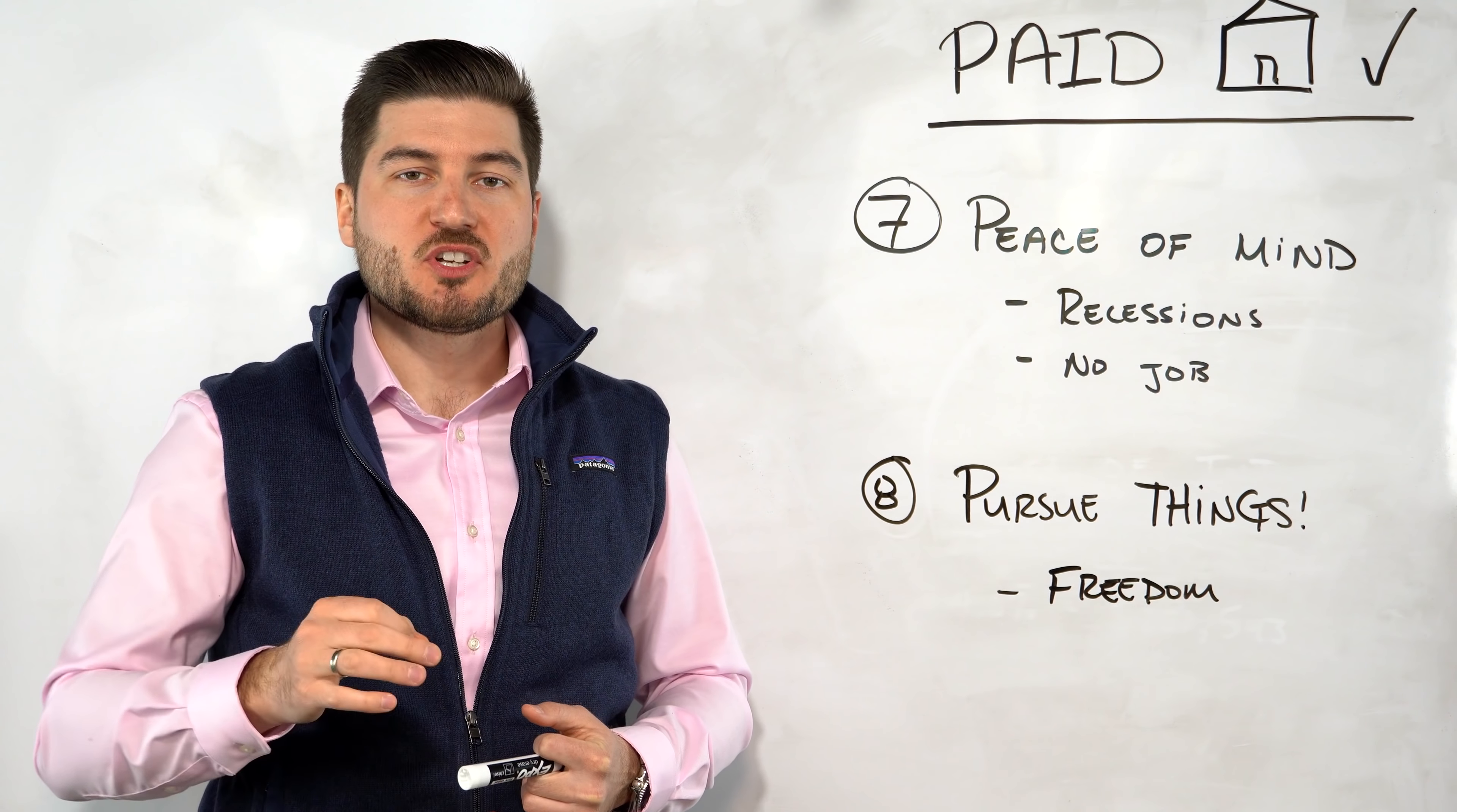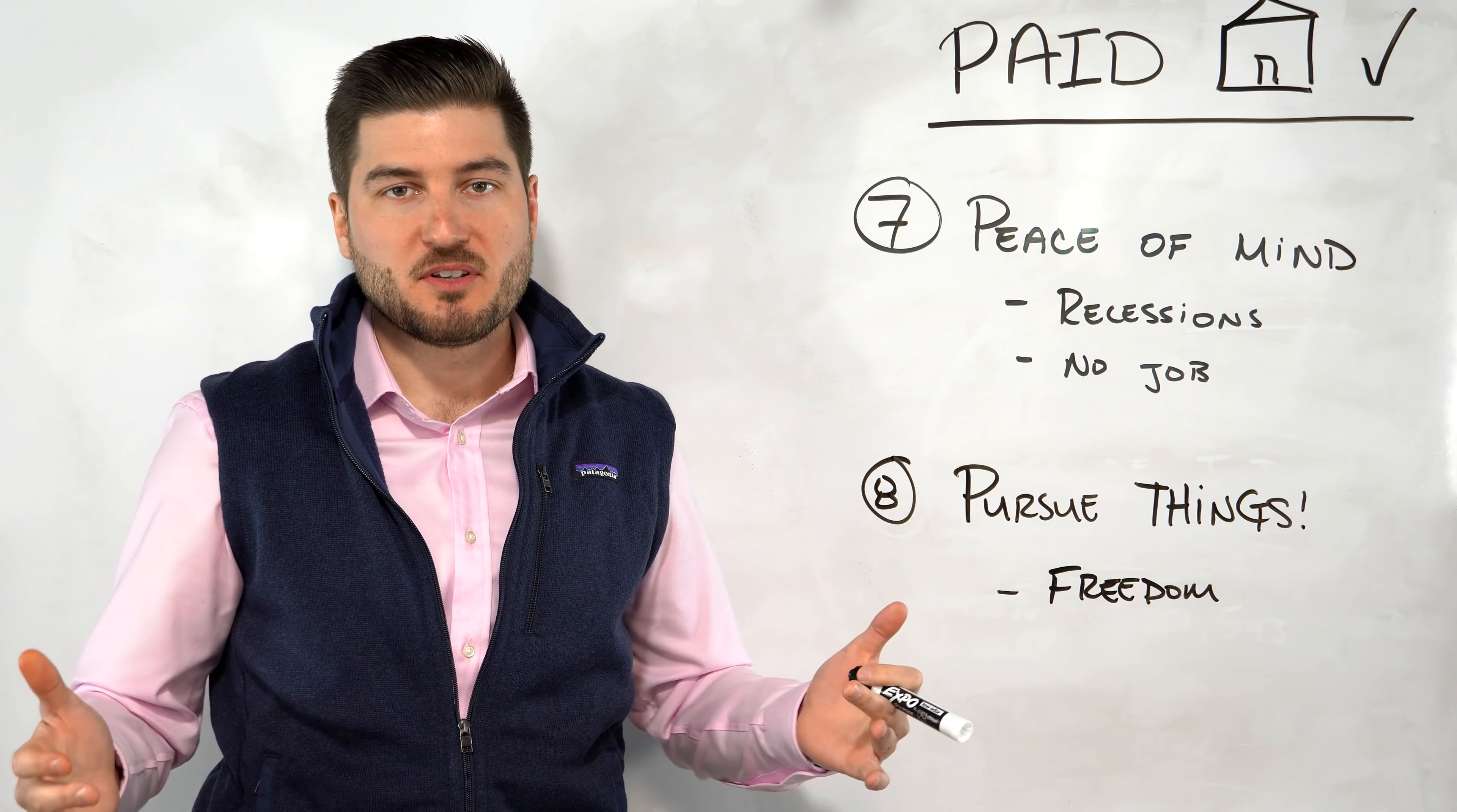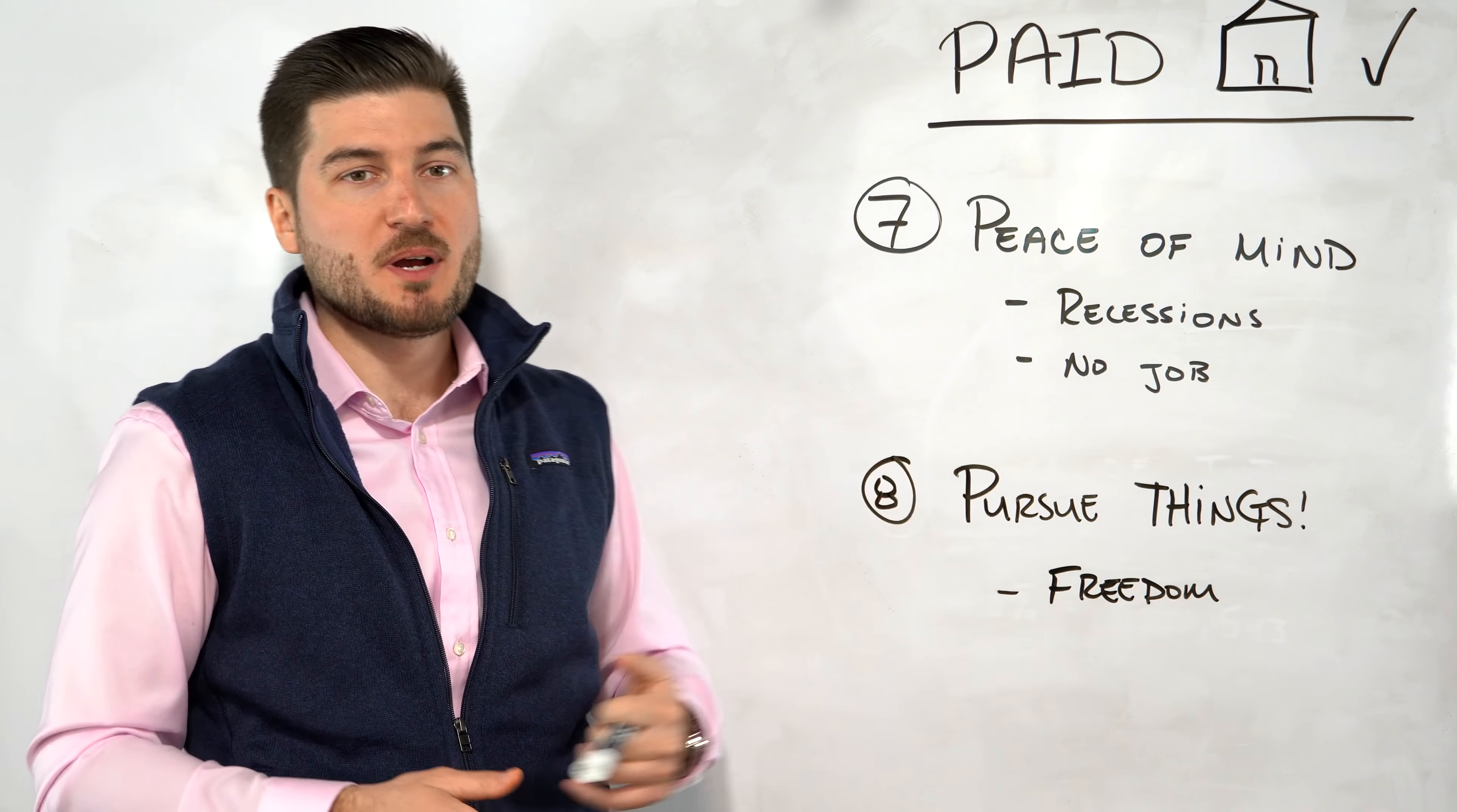Okay, so number seven and eight are where we started getting into the emotional and psychological benefits of not having a mortgage. So number seven is peace of mind. So we've all been through tough times. I remember 2008, I could barely find a job after I graduated with a finance degree because of the great financial crisis. Same thing after last March with the Cervasus sickness. You don't have to worry about job loss. You don't have to worry about recessions. You don't have to worry about unemployment. It's almost riskier to be an employee in this job market, which actually leads me to the next point of number eight.